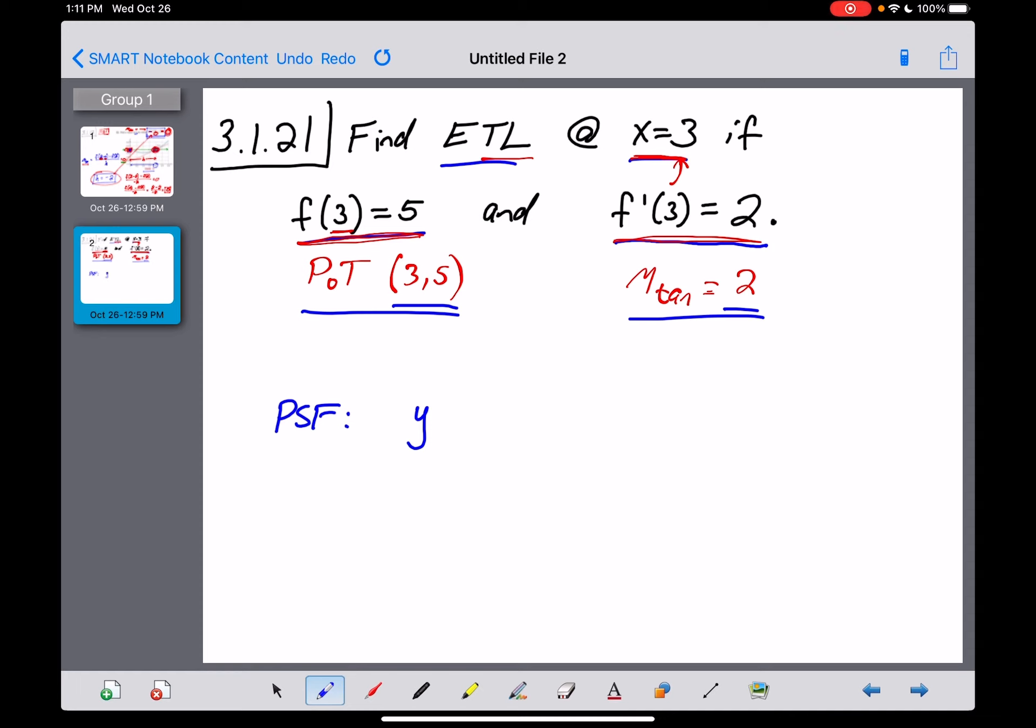Point-slope form is y minus your y-coordinate, so that's going to be y minus 5, equals the slope of your line, which is 2, and then in parentheses, x minus your x-coordinate here, which is 3.